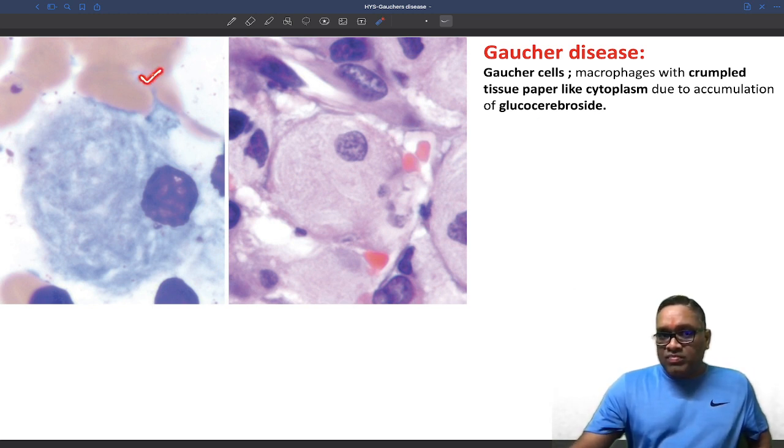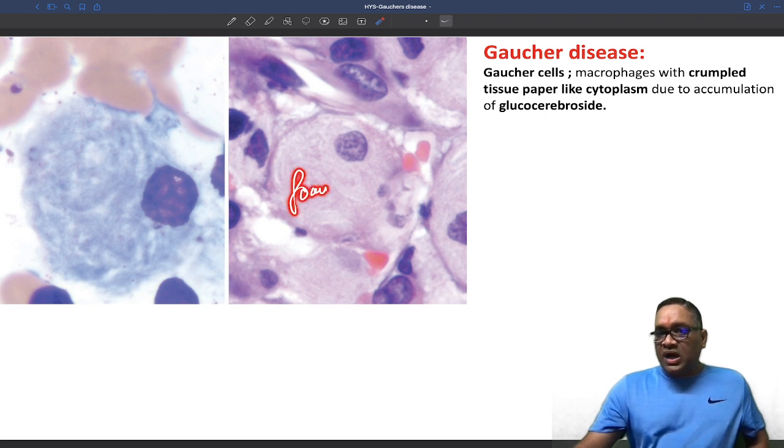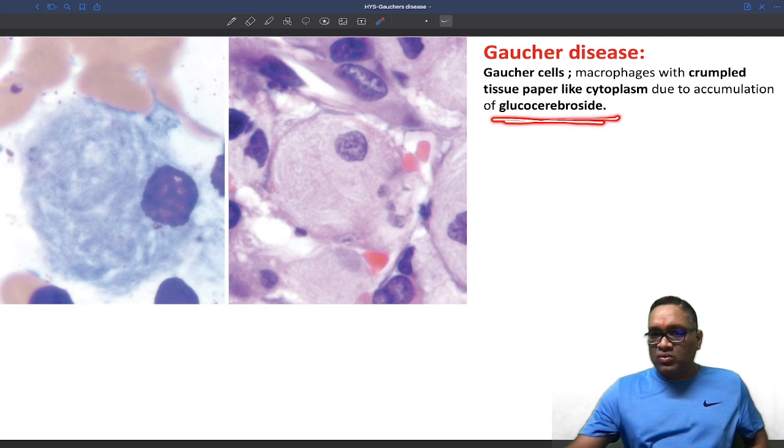This is the bone marrow aspirate and this is the H&E section. In both the bone marrow aspirate and H&E section, foamy macrophages are visible. These are foamy macrophages because of the excessive amount of glucocerebroside.